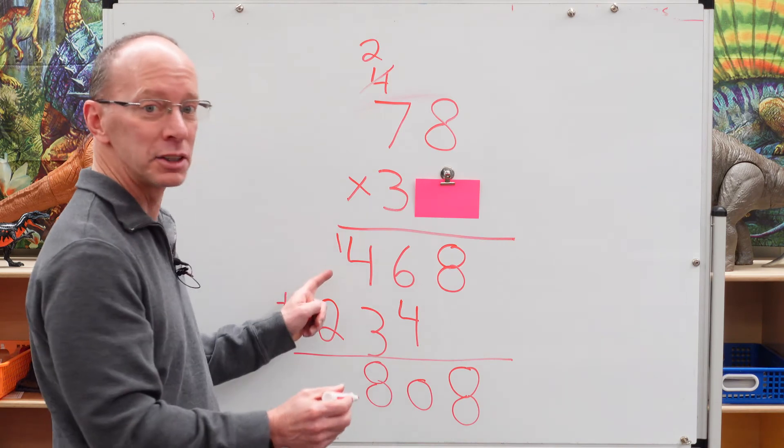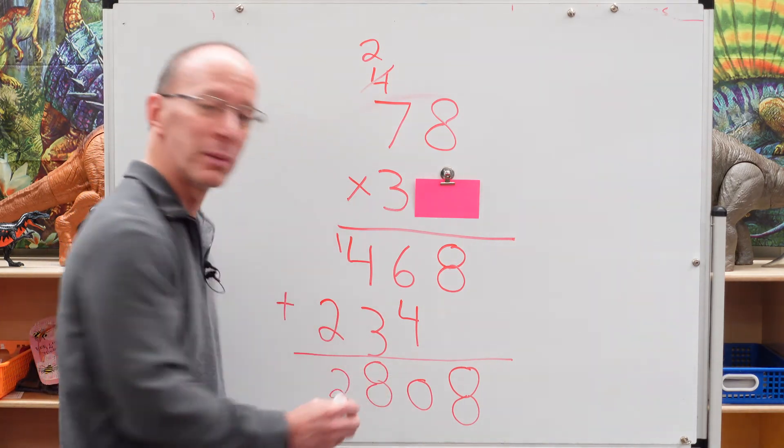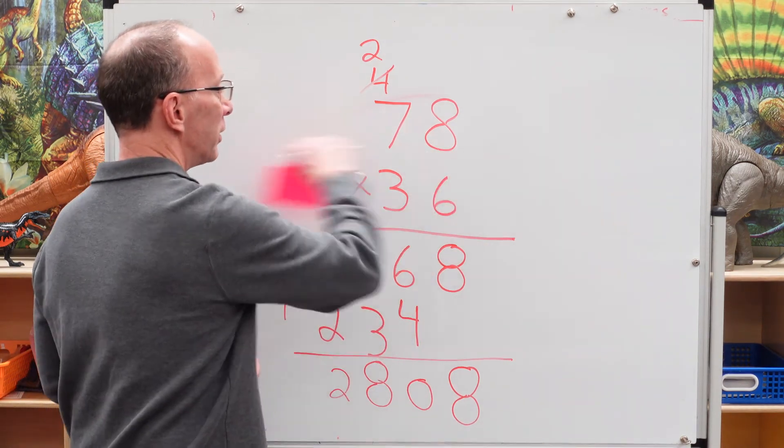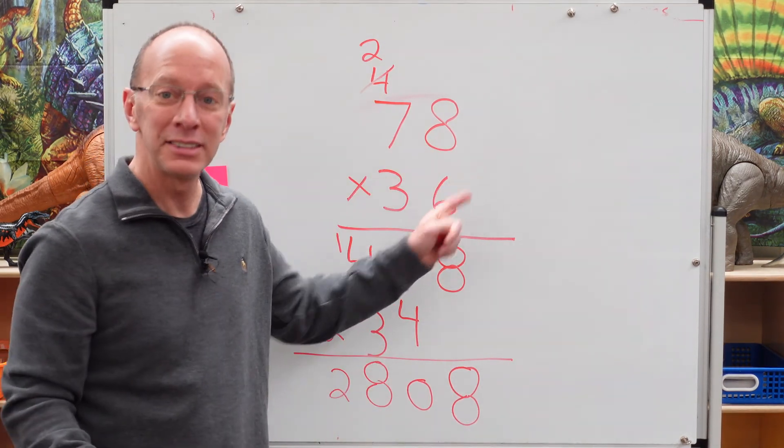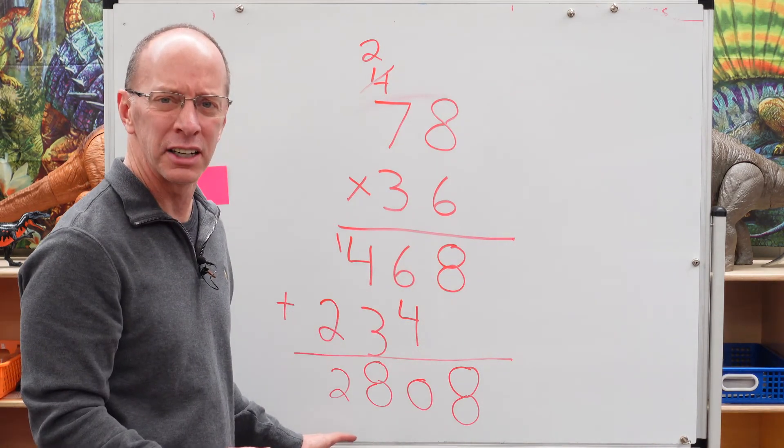Nothing right here. Just nothing plus 2, 2. Buckle my shoe. All right. So, we have 78 times 36 equals 2,808.